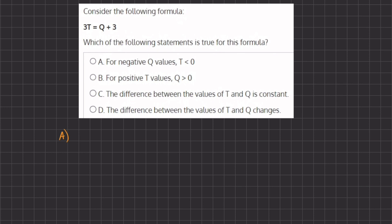Now if we plug in -1 for the value of Q, Q = -1, let's see what happens. We have 3T = -1 + 3. So if we simplify, we have 3T = -1 + 3, which gives us a positive 2.